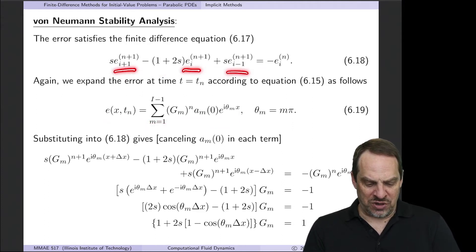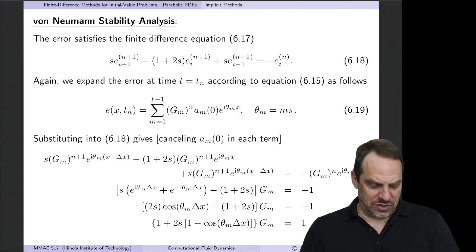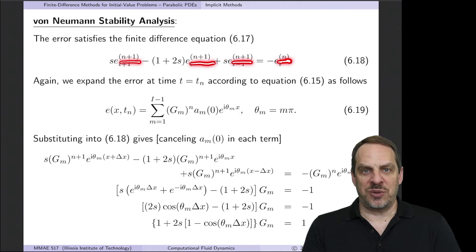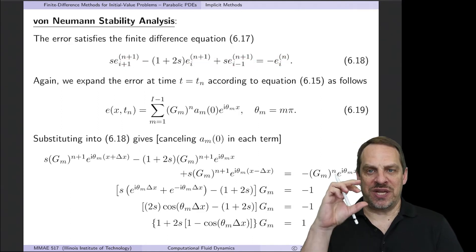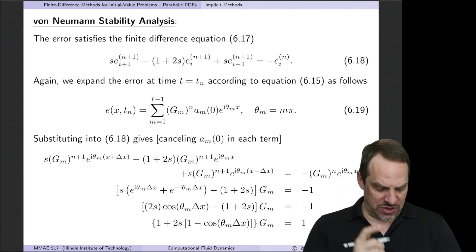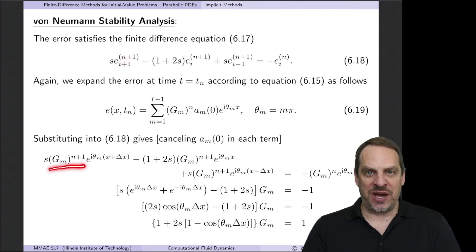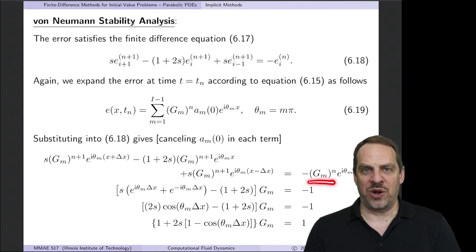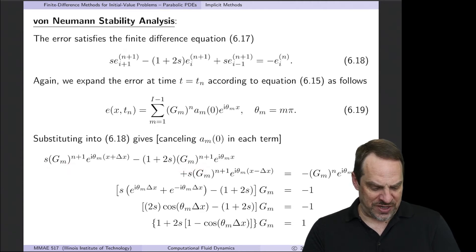We substitute this expansion into the error equation. The subscripts tell us where we are in x: i plus 1 gives x plus delta x, i gives x, and i minus 1 gives x minus delta x. The superscript tells us which time step we're at, giving the power of the gain. At n plus 1 we have g_m to the power n plus 1; at n we have g_m to the power n. Every term has g_m^n and e^{i theta_m x}, so we can cancel those, leaving us with an expression involving e^{i theta_m delta x} and e^{-i theta_m delta x}.